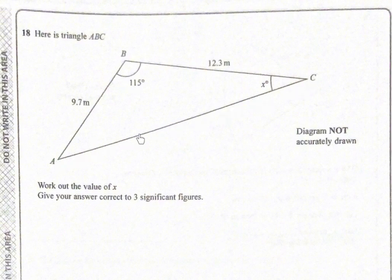After we find AC, then we can find X using sine rule: 9.7 over sine X equals AC over sine 150.